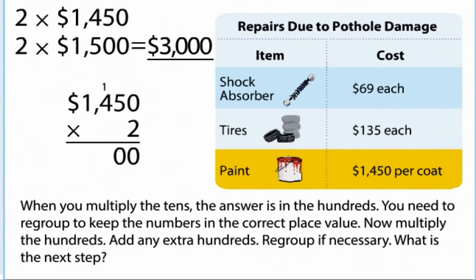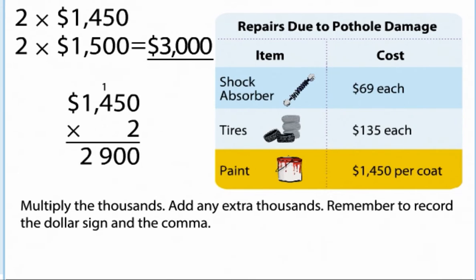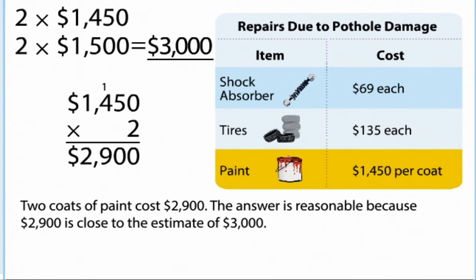Now multiply the hundreds. Add any extra hundreds. Regroup if necessary. What is the next step? Multiply the thousands. Add any extra thousands. Remember to record the dollar sign and the comma. Two coats of paint cost $2,900. The answer is reasonable because $2,900 is close to the estimate of $3,000.